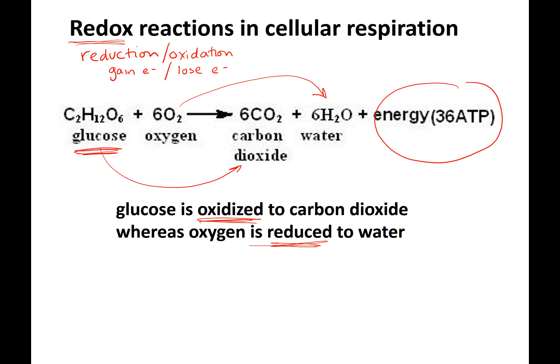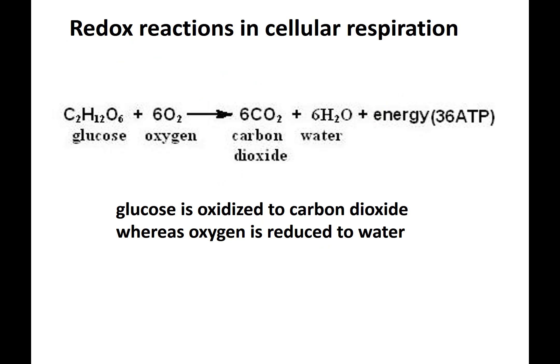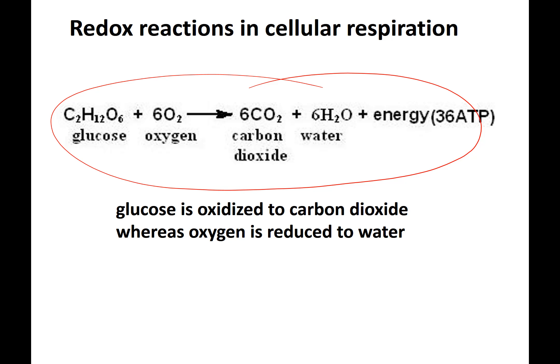This lecture is going to focus on the four stages of cellular respiration. This overall equation takes into account about 20 steps for metabolic pathways. The overall equation has a delta G of negative 686 kcals per mole, so it's an exergonic, energy-releasing reaction.